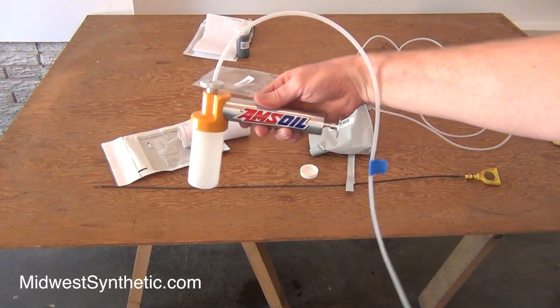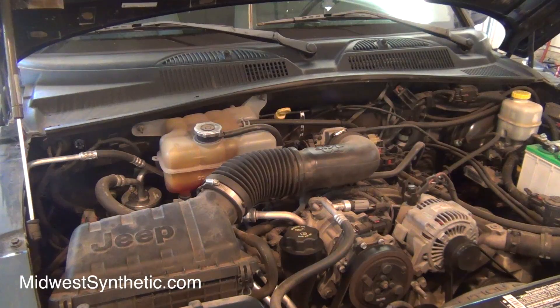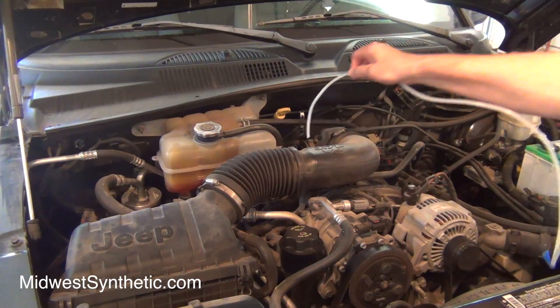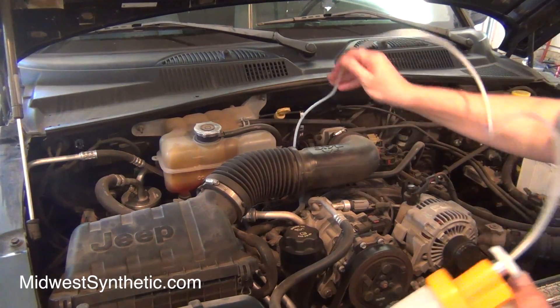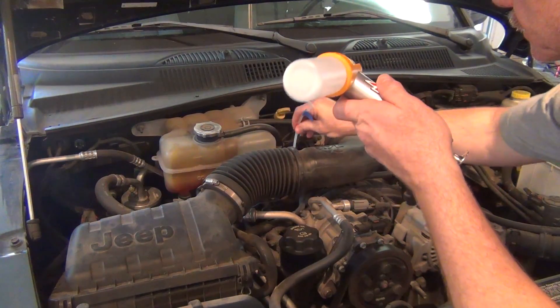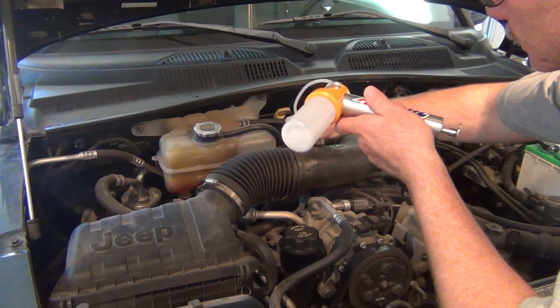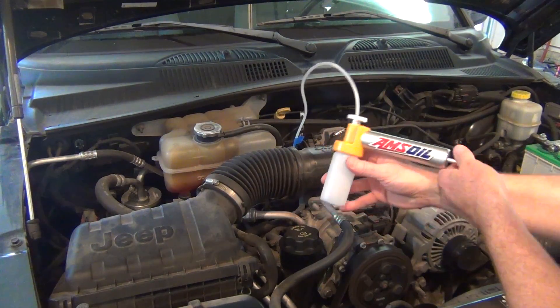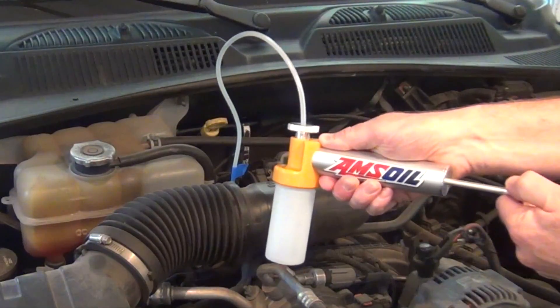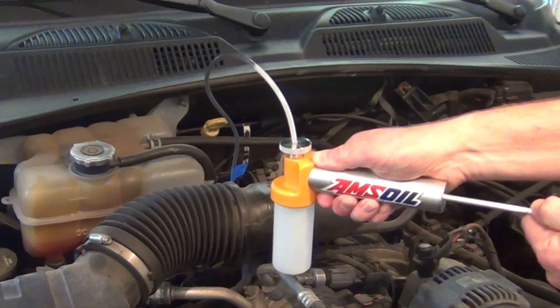The bottle and the kit screws right on the pump. Stick the tubing into the dipstick tube up to the tape mark. That locates the end of the tubing at the proper depth in the oil pan. Here you can see oil coming up the tube and starting to fill the bottle.